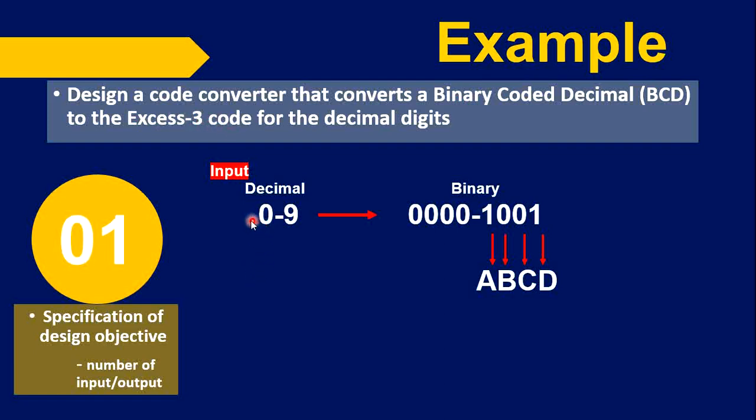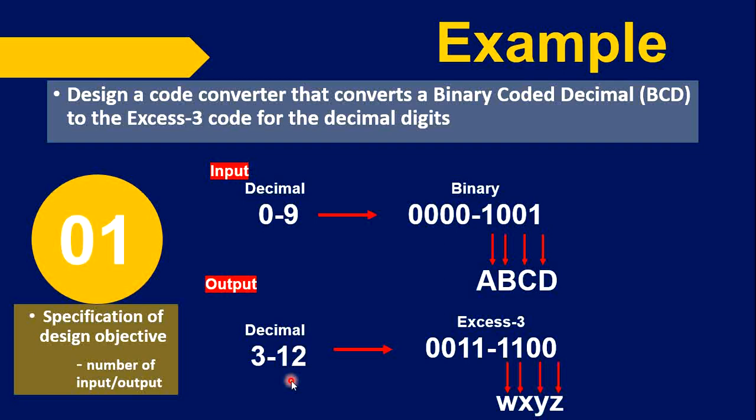The output is Excess-3 code. Zero should have an excess of three, so we add three each from zero to nine. Our output is from three to twelve. Convert that into binary, which is equivalent to 0011 to 1100. Four bits are needed: W, X, Y, and Z. We've now defined the number of inputs (four) and the number of outputs (four).